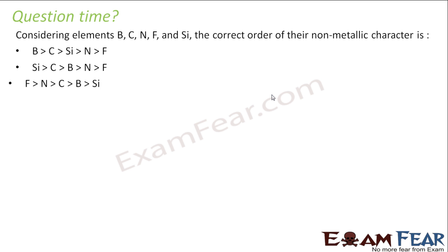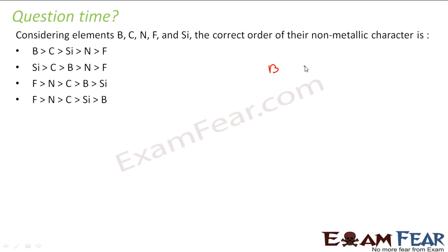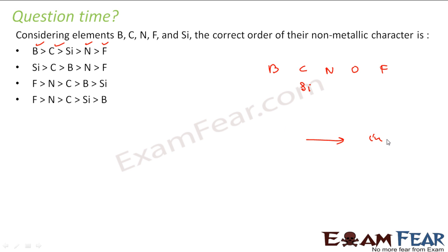We have to find the correct order of non-metallic character. Let us arrange the elements: boron, carbon, nitrogen, oxygen, fluorine — and silicon, which is just below carbon. Non-metallic character increases going up a group and increases across the period towards the right, so it increases in the direction towards fluorine.